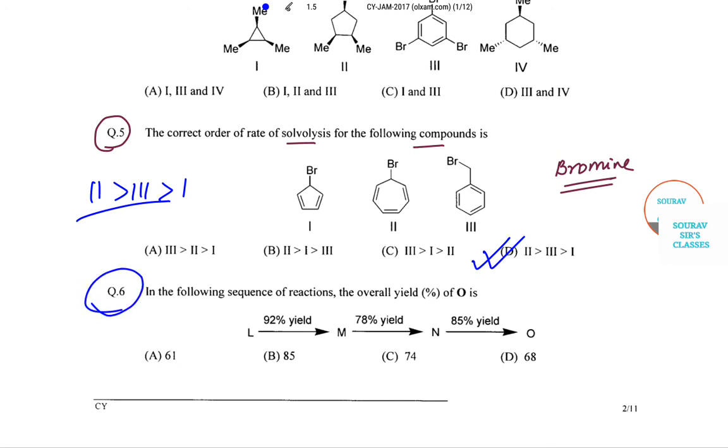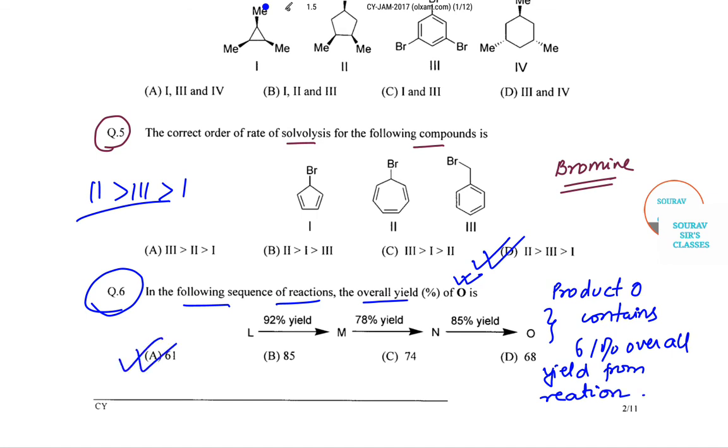Question number 6: In the following sequence of reactions, the overall yield percentage of O is what? It is very clear from the given sequence of reactions that product O contains 61% overall yield from the reaction. So A will be the correct answer to this particular question.